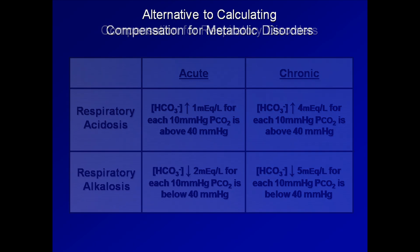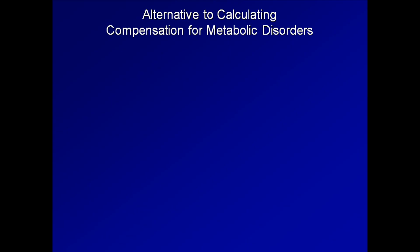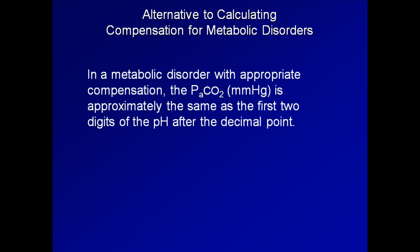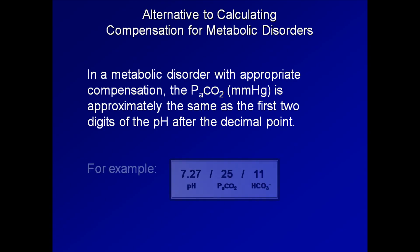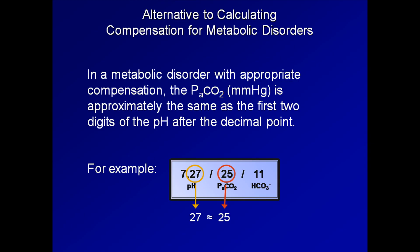There is an extremely easy alternative to calculating compensation for metabolic disturbances. In a metabolic disorder with appropriate compensation, the pCO2 in mmHg is approximately the same as the first two digits of the pH after the decimal point. For example, with a pH of 7.27, pCO2 of 25, and bicarb of 11 — take the first two digits after the decimal, which is 27, and compare it to the pCO2 of 25. They are approximately equal, so there is appropriate physiologic compensation for this metabolic acidosis.